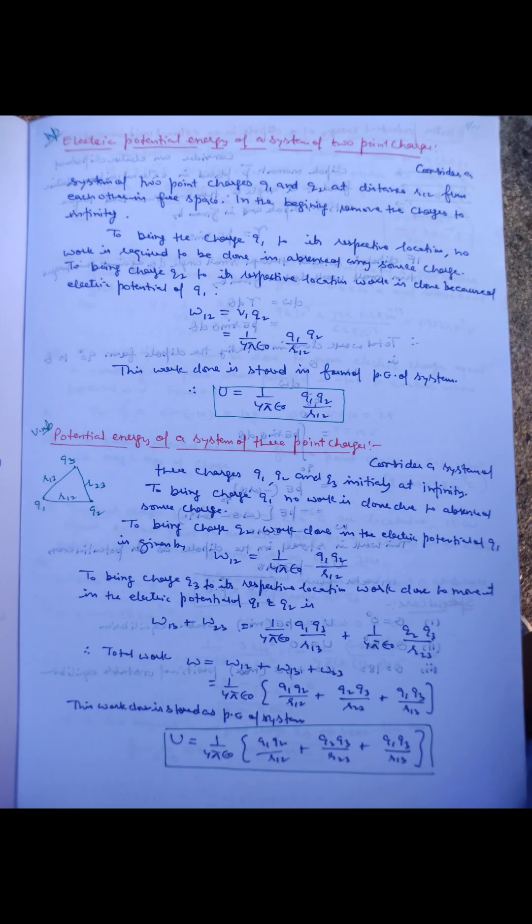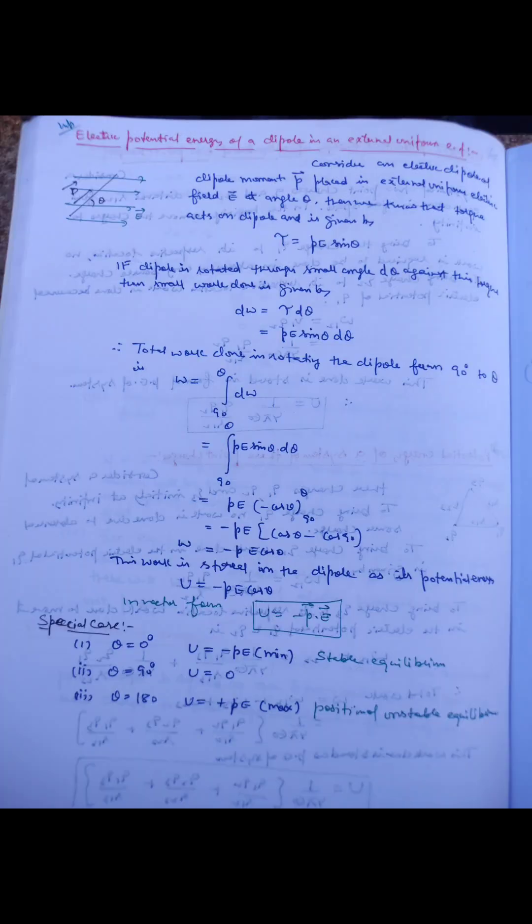Electric potential energy of a system of point charges is defined as the total work done in bringing the charges to their respective locations from infinity. For a system of two point charges, potential energy is equal to 1/(4πε₀) × q₁q₂/r, where r is the distance between the two point charges.